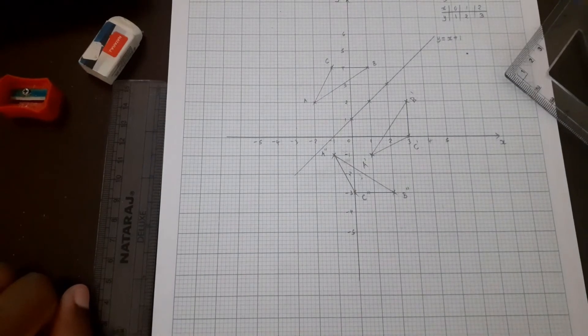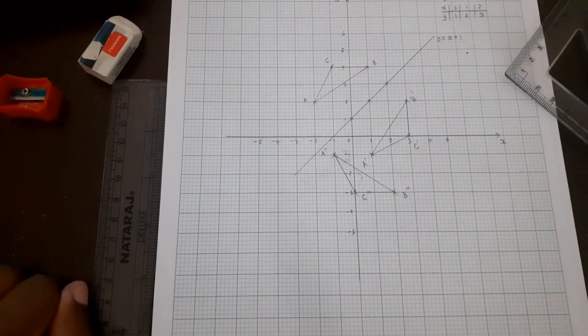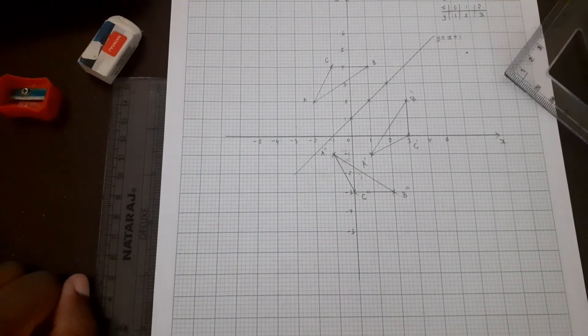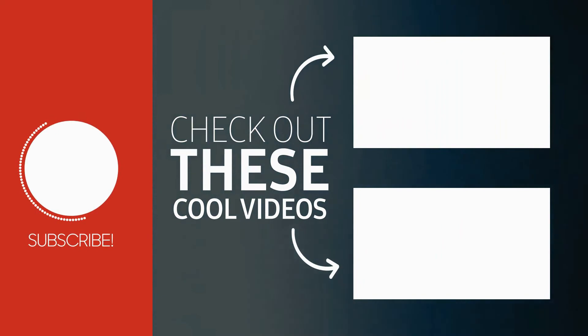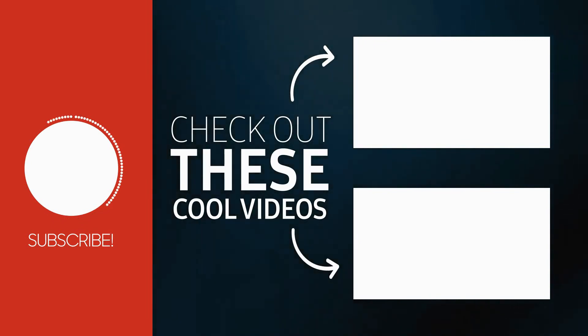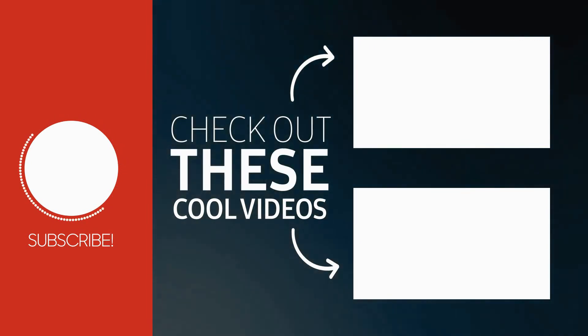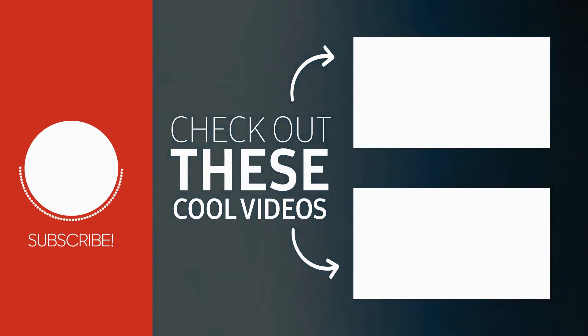And there you have the image under a negative quarter turn about (0,0). I'll see you next time.